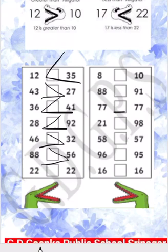We have number 22 from the left side and number 22 from the right side — so the alligator will open its mouth from the front because both numbers are equal.